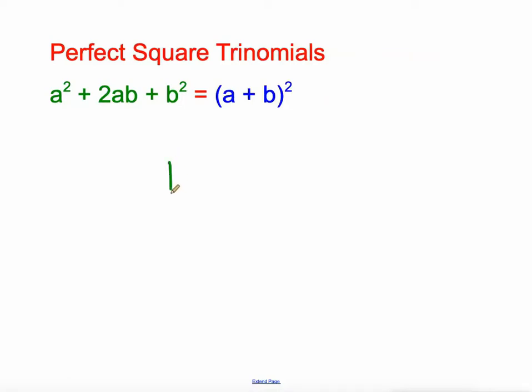So let's make a rectangle diagram. And its area is going to be a squared plus ab plus ab plus b squared. Now if we wanted to factor that, it would be a times a is a squared.